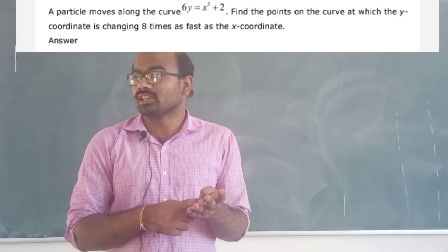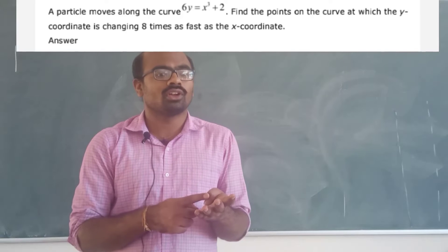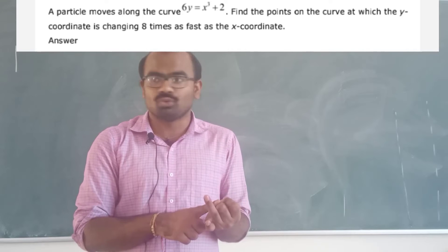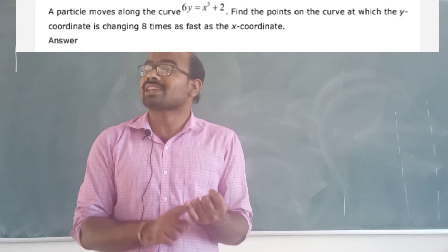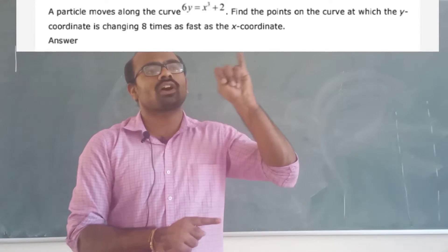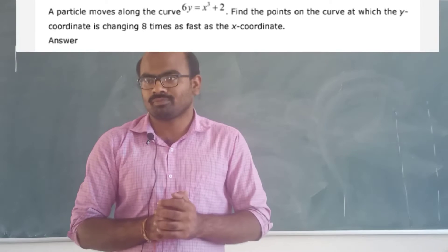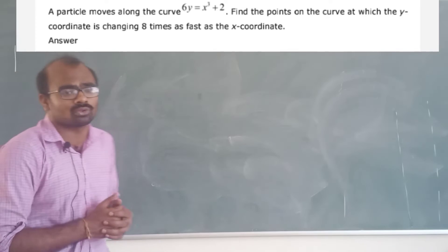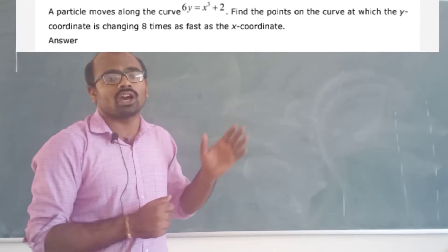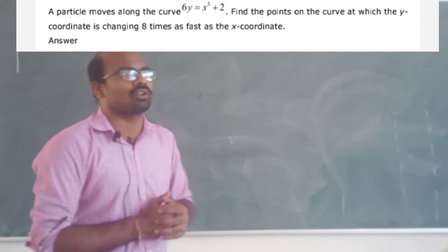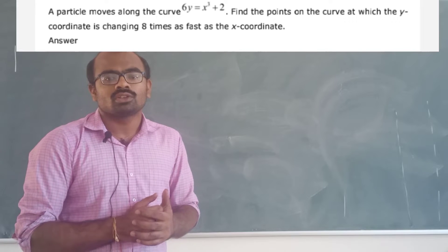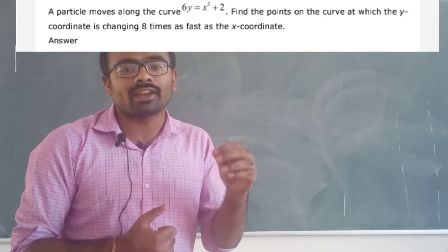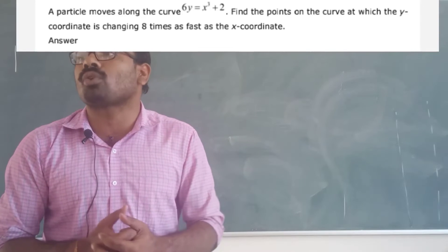New question: A particle is moving along the curve 6y = x². Find the points on the curve at which the y-coordinate is changing 8 times as fast as the x-coordinate.